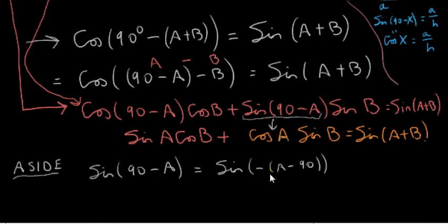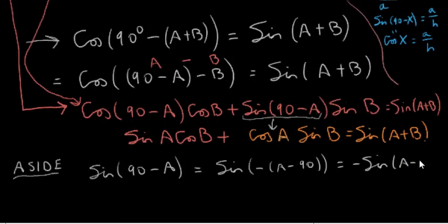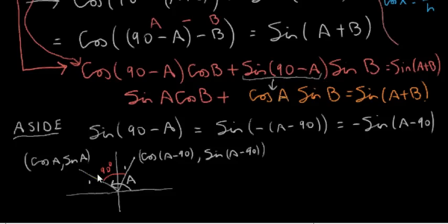As an aside, here's a quick proof that sine of 90 minus A equals cosine of A, without referring to the identities from the last video. We take a minus sign out, so we have minus of (A minus 90). Then we use the fact that the sine of a negative angle is minus the sine of the angle — that is, sine of minus X equals minus sine of X — where X here is A minus 90.